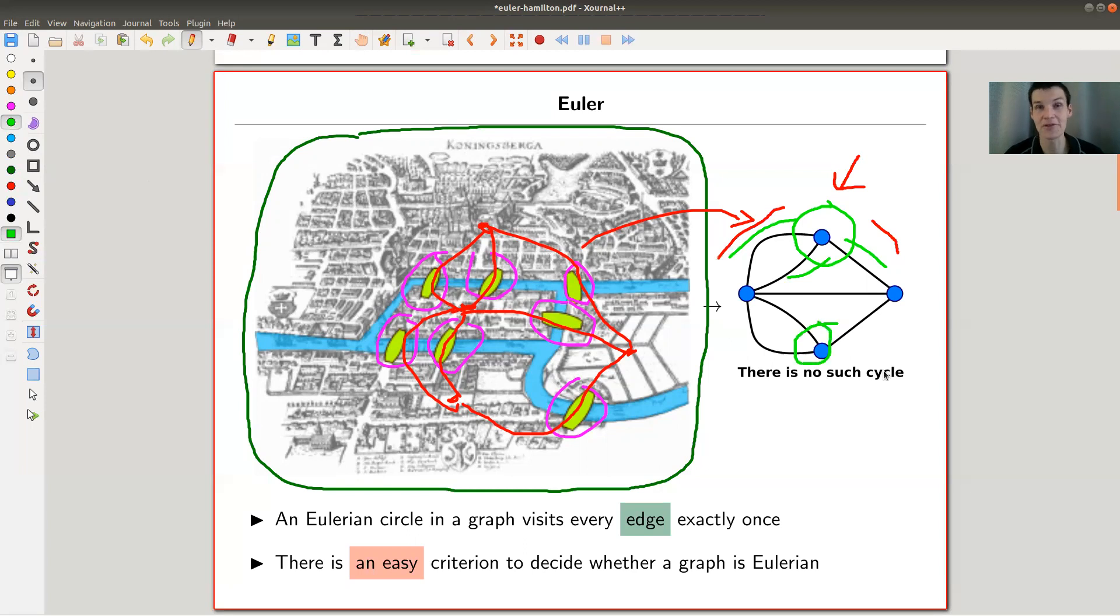This one also has an odd number of adjacent vertices, so this also has to be a start or end vertex. And so does this one and this one. But now we have a problem because we can only have one start vertex and one end vertex. Euler just created graph theory solving this problem. Very simple, very easy solution, brilliant Euler, genius among geniuses.